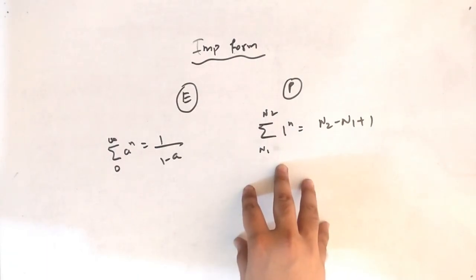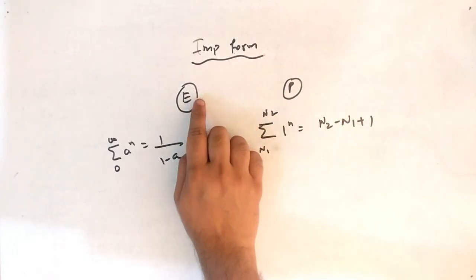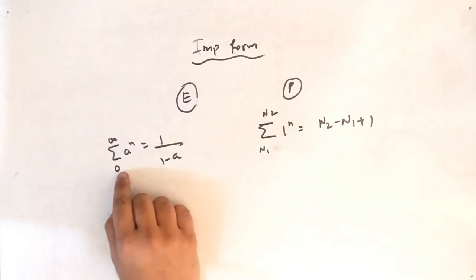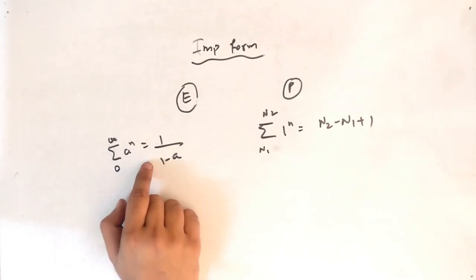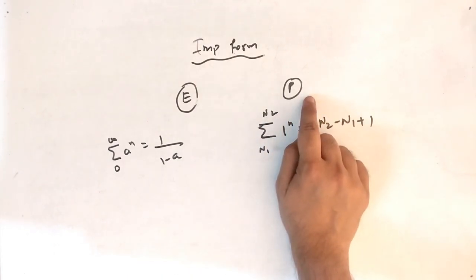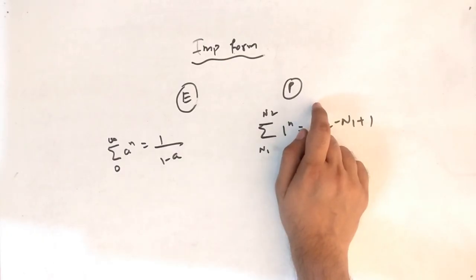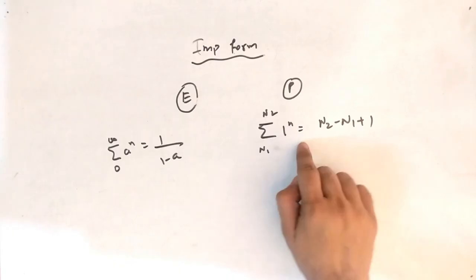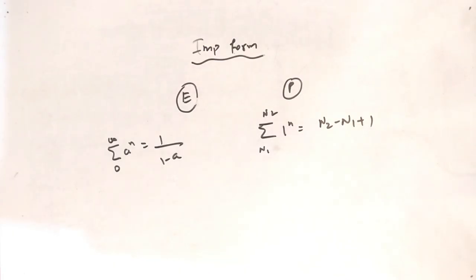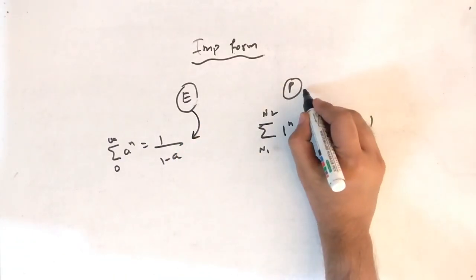Before solving examples, the important formulas: for energy, the formula is summation from −∞ to ∞ of |x(n)|². If we have summation from 0 to ∞ of a^n, the answer is 1/(1−a). For power, we have the limit formula with 1/(2N+1). If we have summation from n1 to n2 of 1^n, the answer is n2 − n1 + 1.